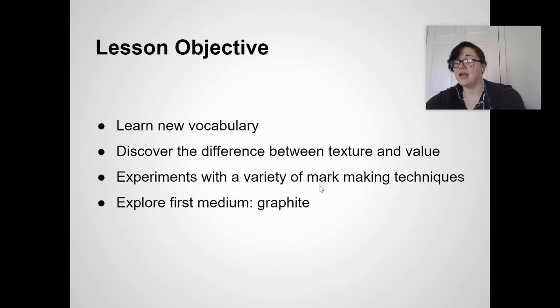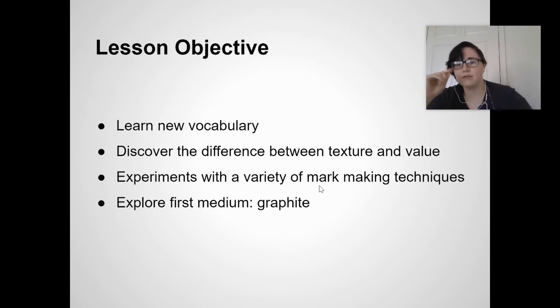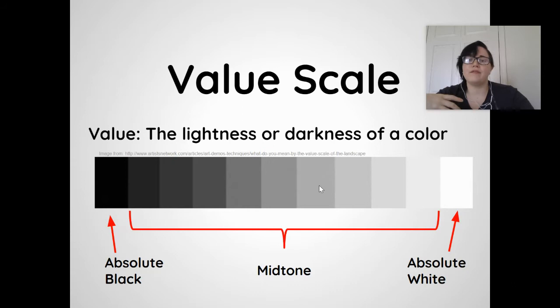A medium is just something you use to make art. I've seen artists use food — chocolate or ketchup — as their medium, or even their physical body. More traditional methods include painting, graphite, or clay. All of these are called media (plural) or medium (singular). For our first two units, we're going to focus exclusively on graphite.